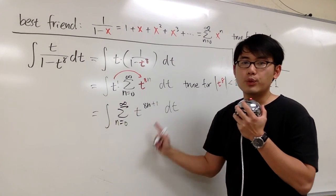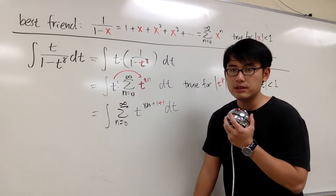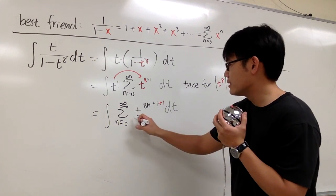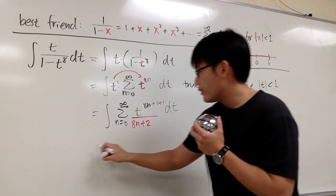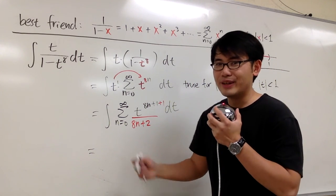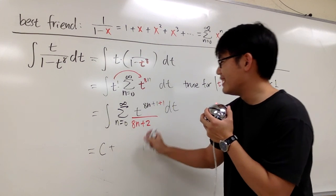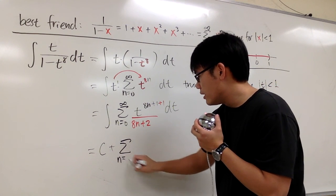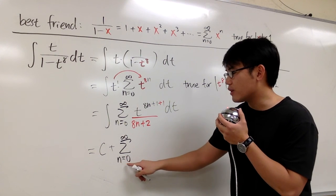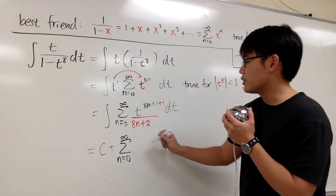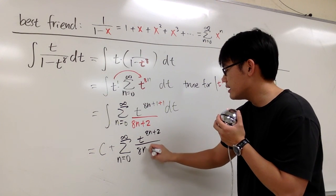Now let's integrate this. For t to the 8n plus 1 power, we add 1 to the exponent and divide by the new exponent, which is 8n plus 2. And don't forget, whenever we integrate there's always a plus C — for integrating a series we put C first. So it's C plus sigma from n equals 0 to infinity of t to the 8n plus 2 over 8n plus 2.